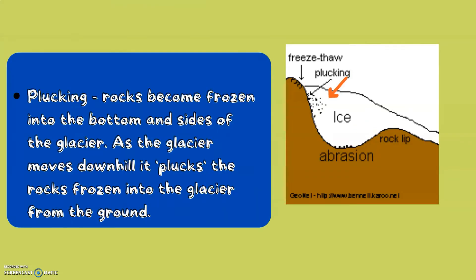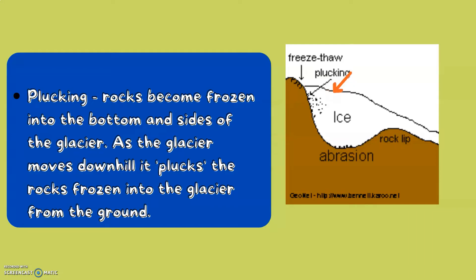The second type of erosion is plucking. This is when rocks become frozen into the bottom and sides of the glacier. As the glacier moves downhill, it plucks the rocks from the land and freezes them into the glacier.